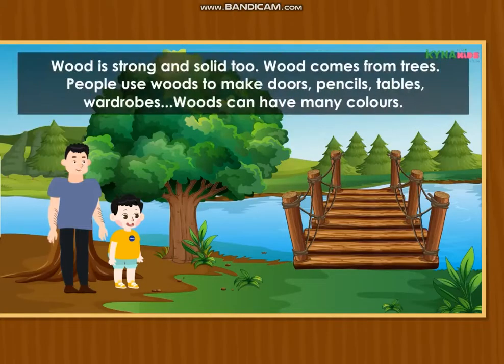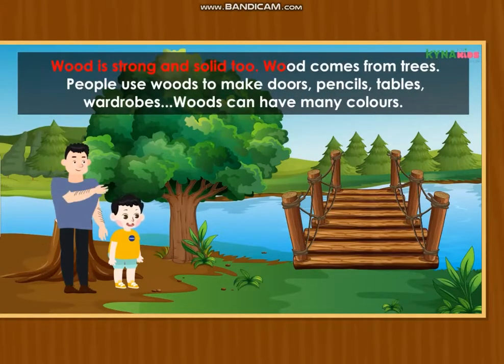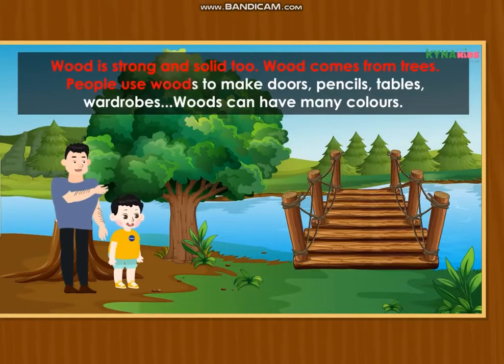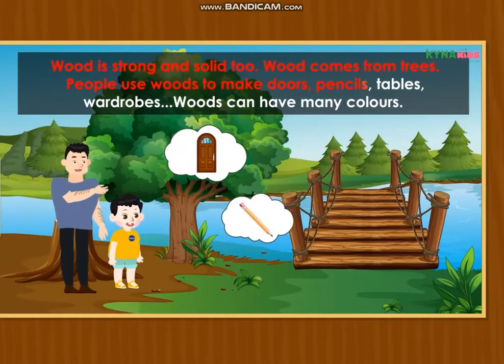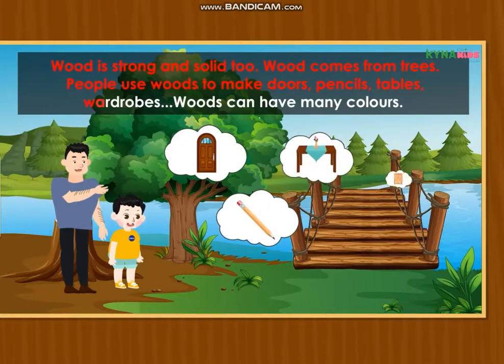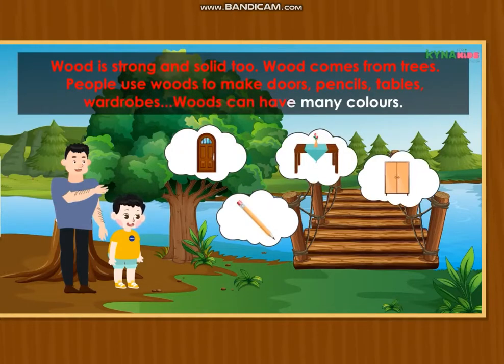Wood is strong and solid too. Wood comes from trees. People use wood to make doors, pencils, tables, wardrobes. Wood can have many colours.